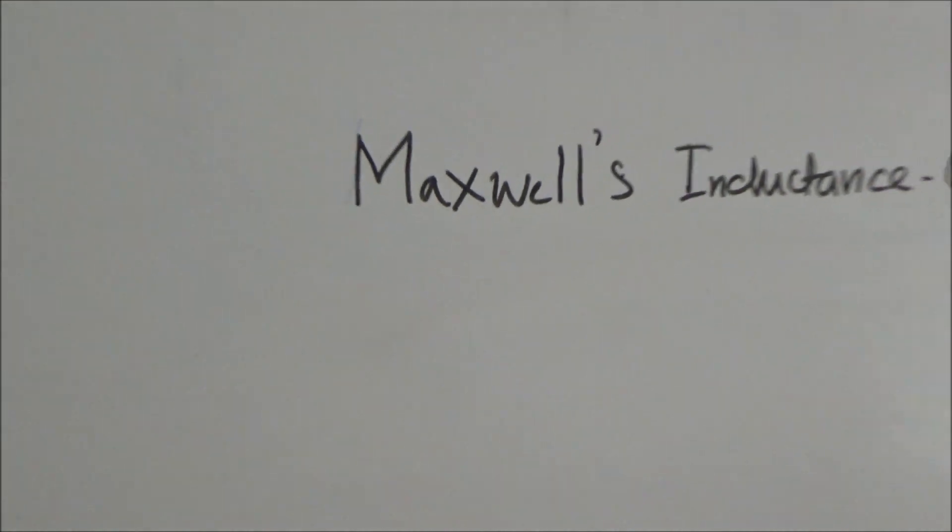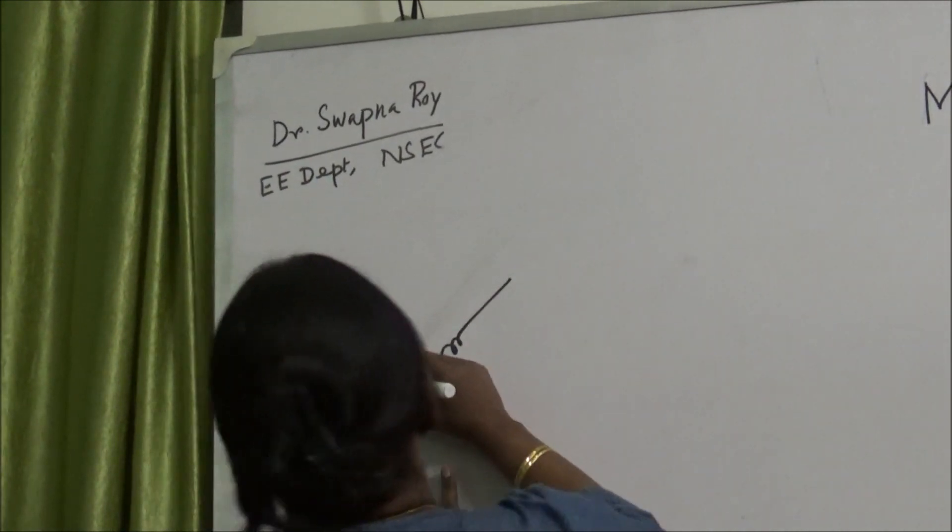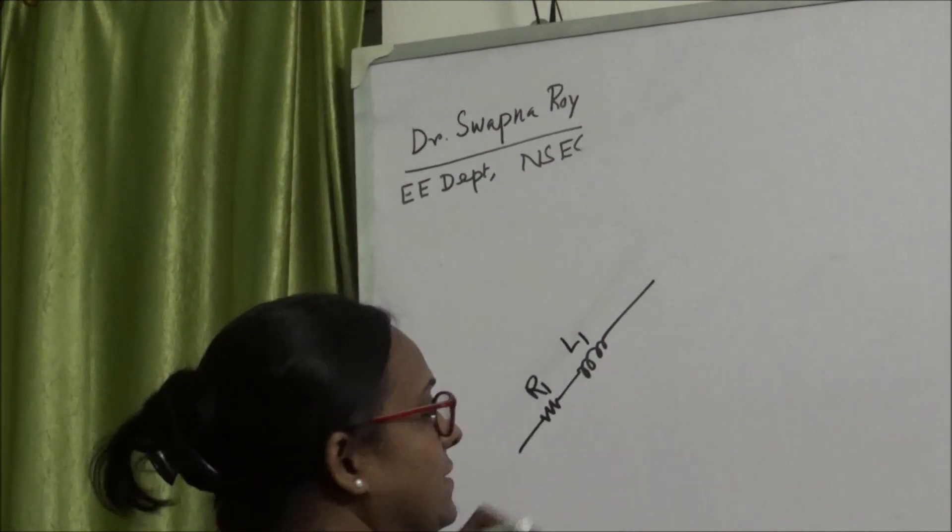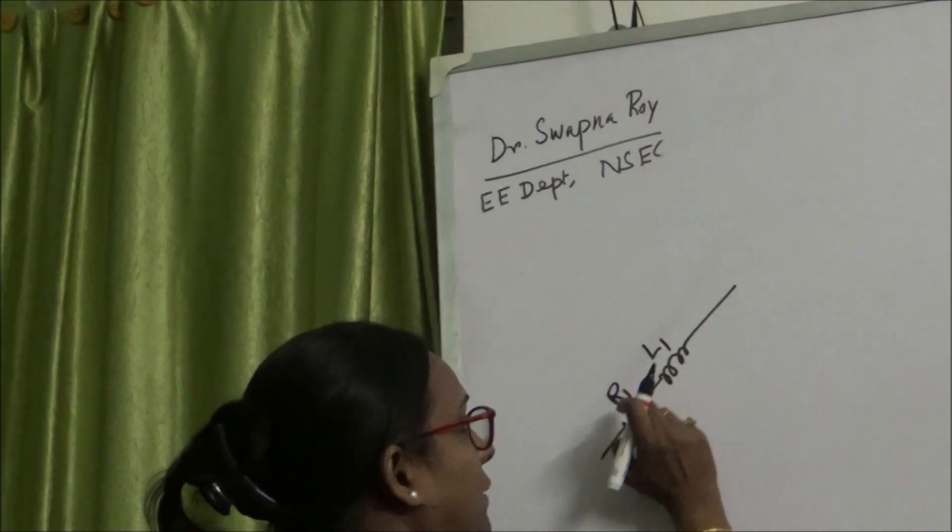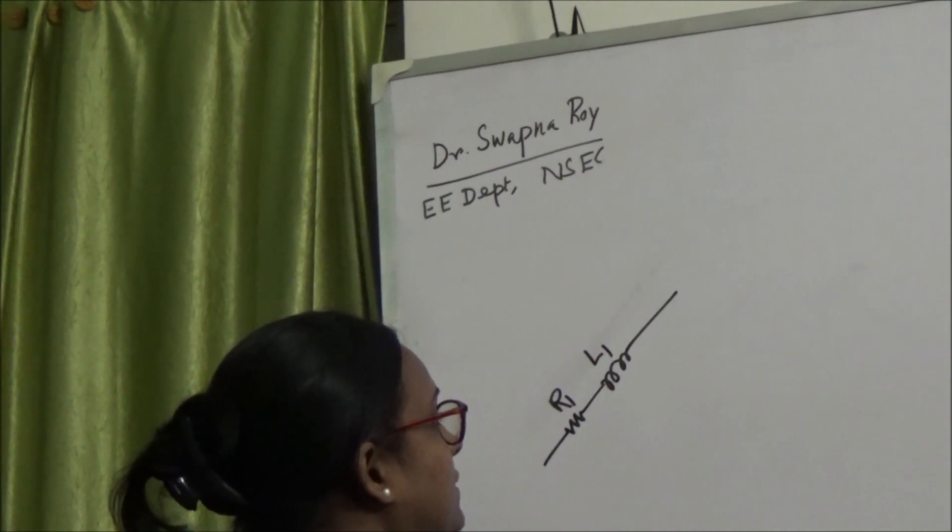First we will draw the diagram. In the first arm we can see one resistance R1 and one inductance L1 connected in series, which is the unknown inductance. The resistance R1 is the internal resistance of the inductance L1.